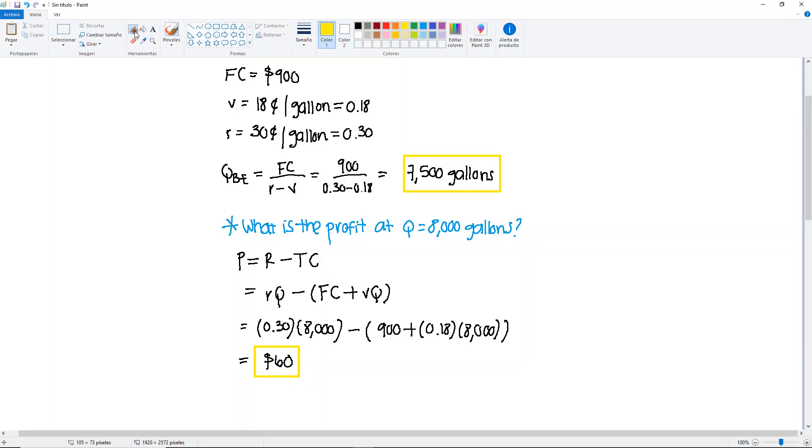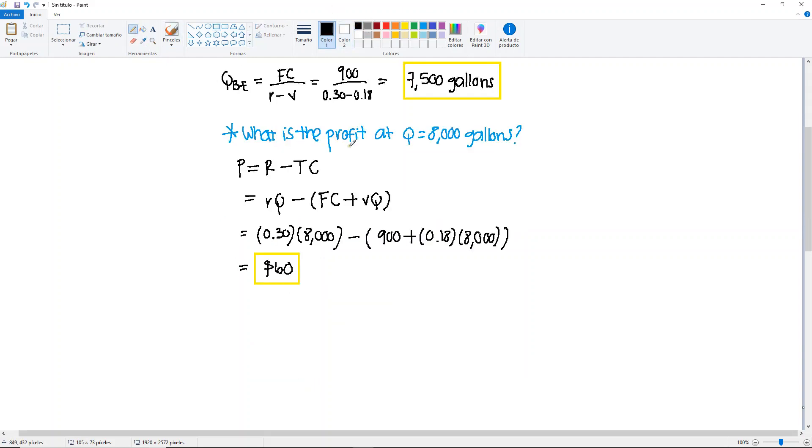There's other ways to do this without using the formulas, but I would recommend that you stick to what we know. But you could have also done the following. So you can get the difference between the revenue and the variable cost per unit. So it would be 0.30 minus 0.18, that gives us 0.12 per gallon.